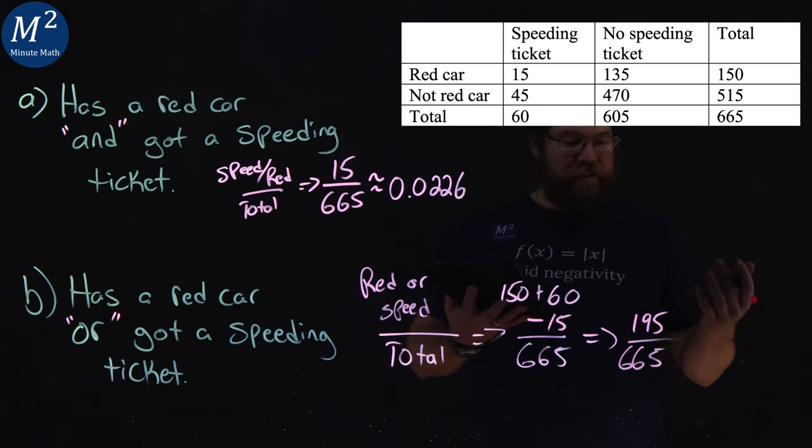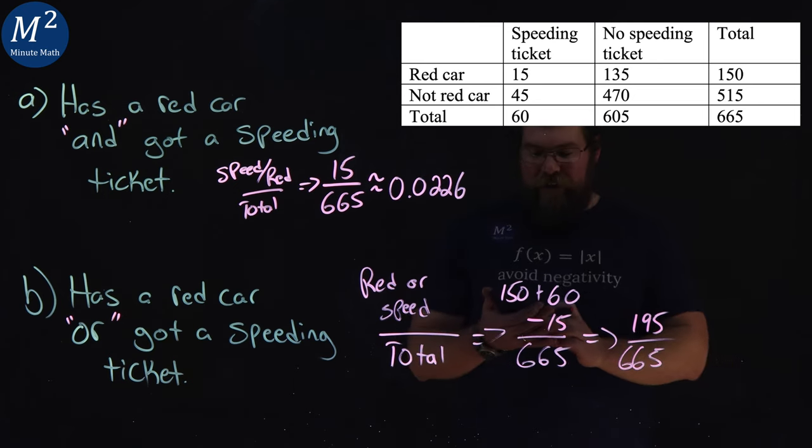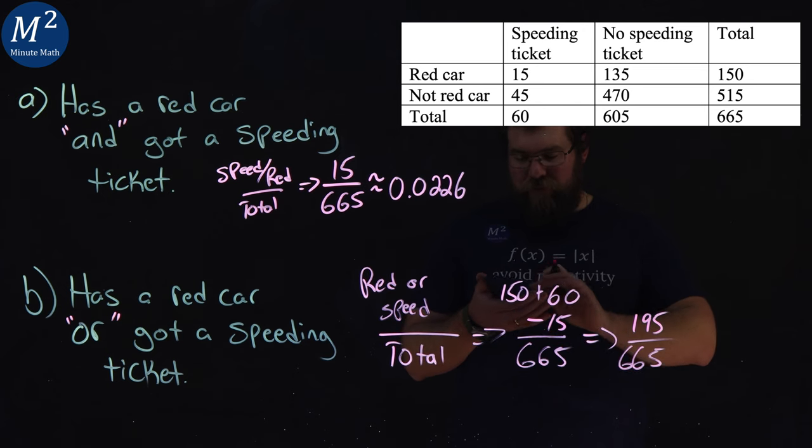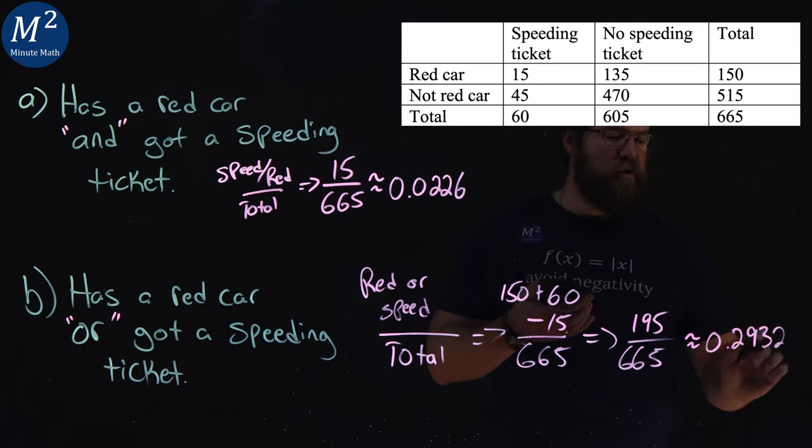And that comes out to be, well, I left it as such, but I can use my calculator here to get that decimal. And so we have 195 divided by 665, and that's approximately 0.2932.